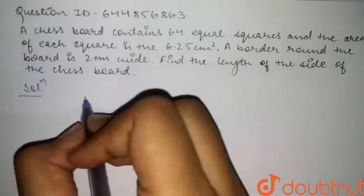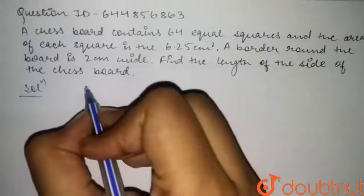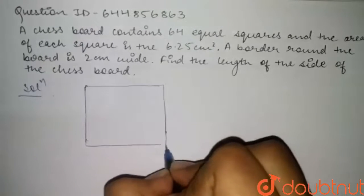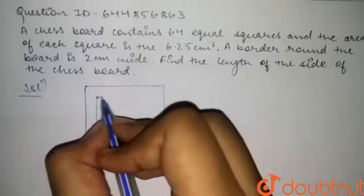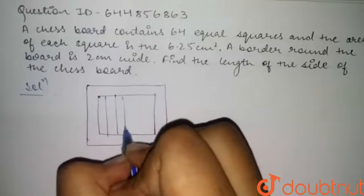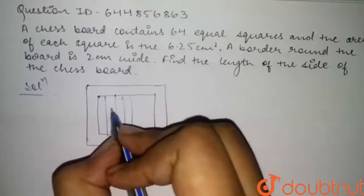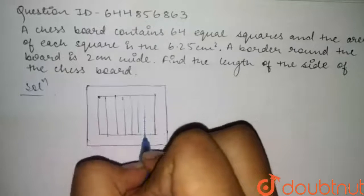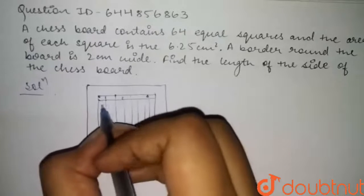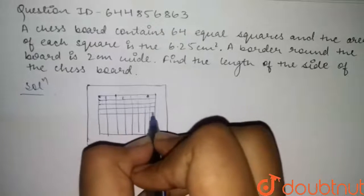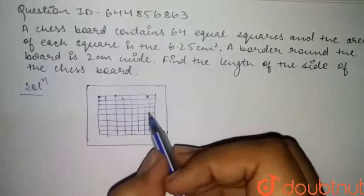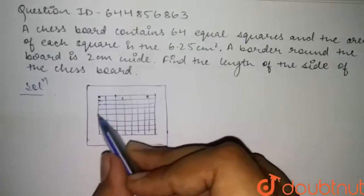First of all, let's draw a rough figure of what the question is asking. This is a chess board with 64 squares — 8 columns: 1, 2, 3, 4, 5, 6, 7, 8, and 8 rows: 1, 2, 3, 4, 5, 6, 7, and 8. So there are 64 squares in total.